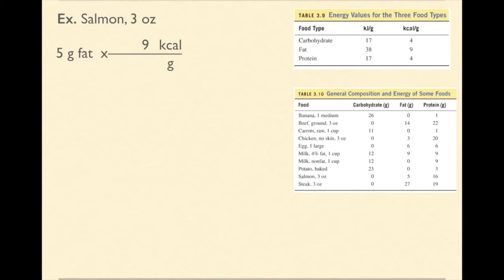There are nine kilocalories per gram of fat. And so that equals 45 kilocalories from fat.